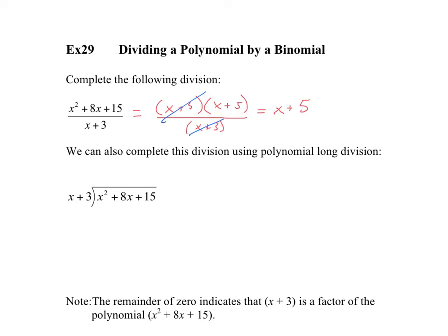Another way is using polynomial long division — a little more complicated, but a skill we need to know. We take x squared and divide it by x, which gives us x. Next, we multiply x times x and x times 3, giving us x squared plus 3x. We subtract that from the original, so x squared minus x squared is 0, and 8x minus 3x is 5x.